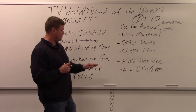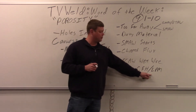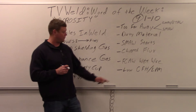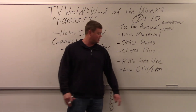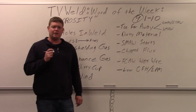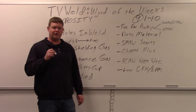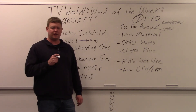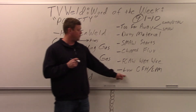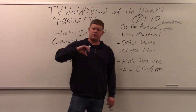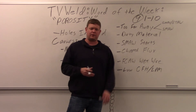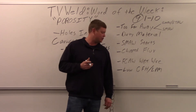Low CFH — low cubic feet per hour, or liters per minute outside the US — is another cause. If you're TIG or MIG welding and you've got a little porosity you can't figure out, check your regulator and see if you have low cubic feet per hour. Turn the thumbscrew up to get more gas flow and help establish that shield.